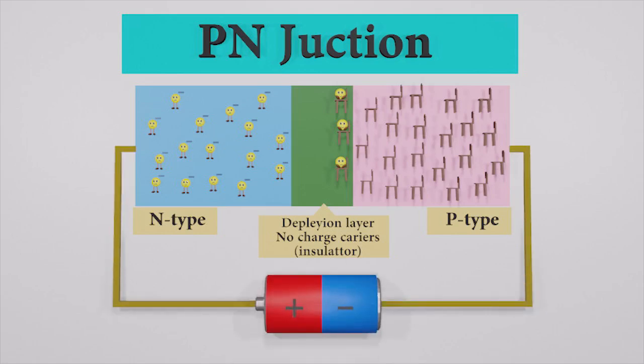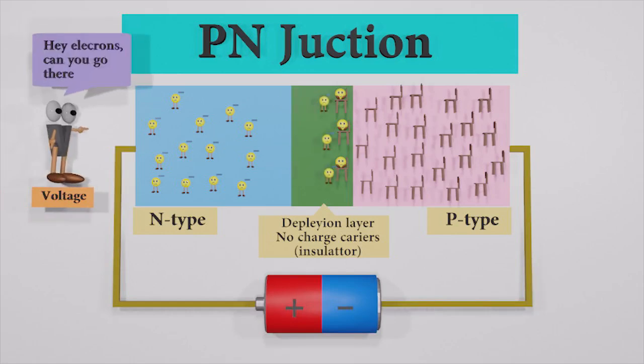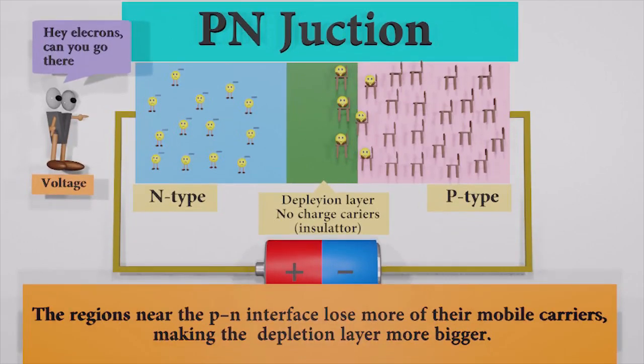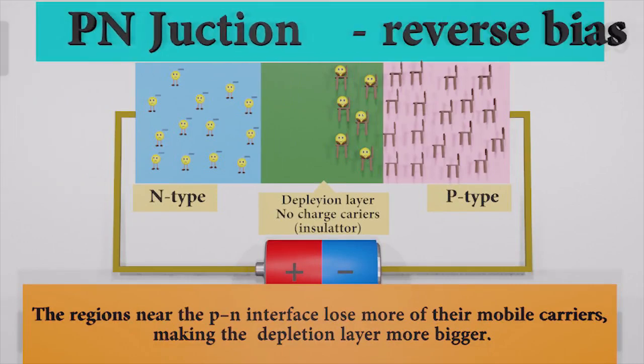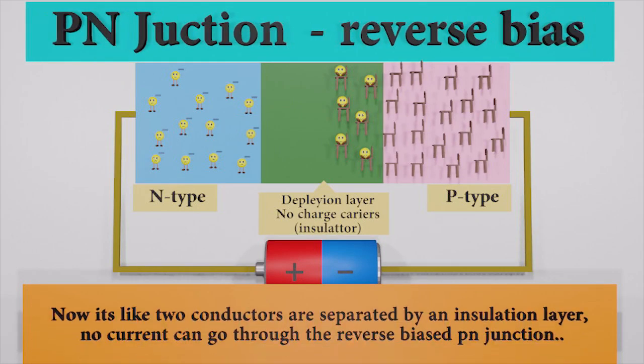If we connect the P-type to the negative terminal of a battery and N-type to a positive terminal, more electrons are attracted to the P-type. The region near the PN interface loses more of their mobile carriers, making the depletion layer stronger. Now it's like two conductors separated by an insulation layer. No current can go through the reverse biased PN junction.